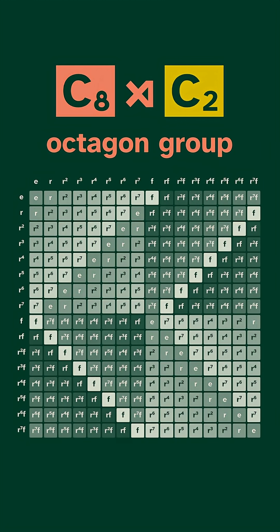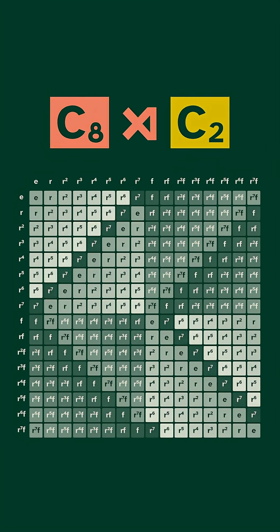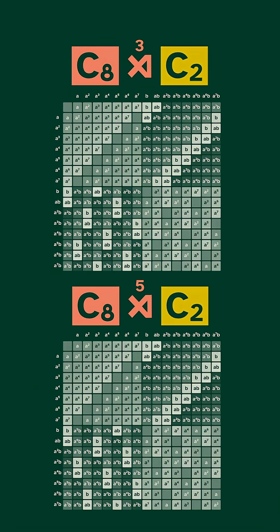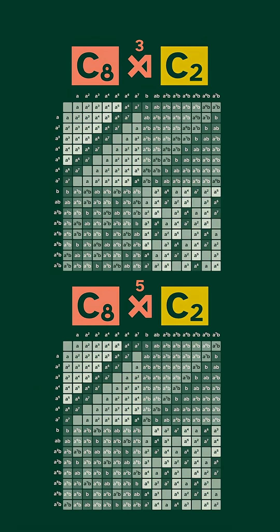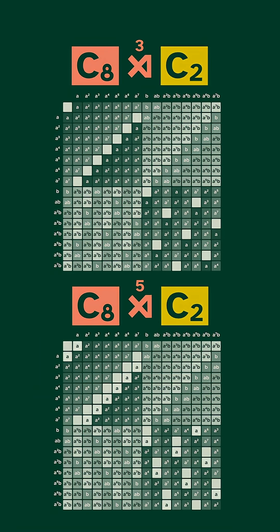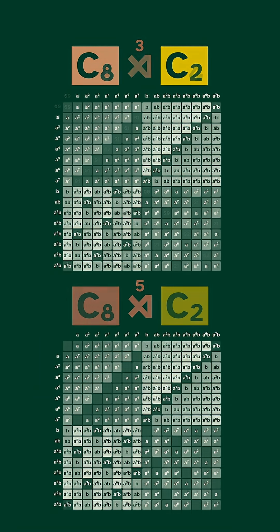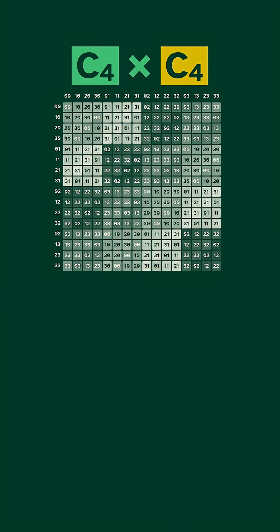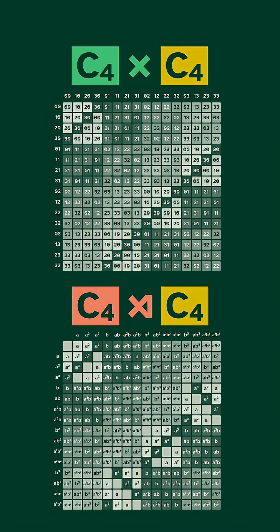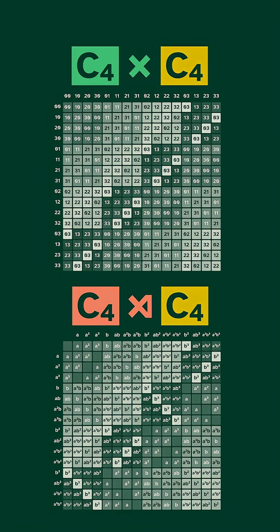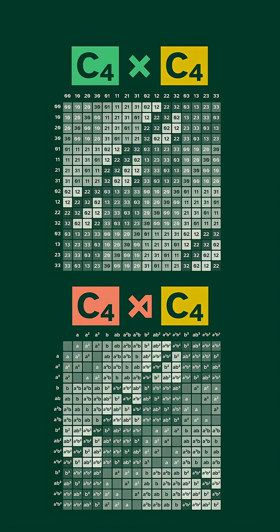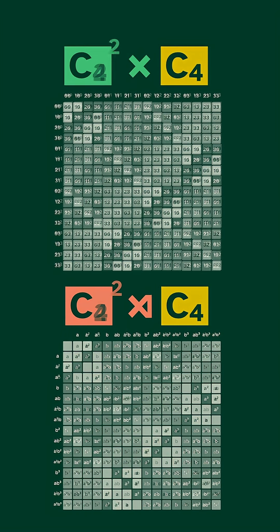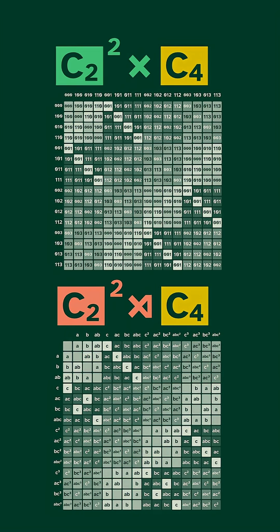But it's not the only semi-direct product for 2 and 8 — there are two others. They give a slightly different pattern. Here's the direct product of C4s and the semi-direct product. They are similar on the large scale, with some minor differences. We see the same kind of thing using C2 squared times C4.